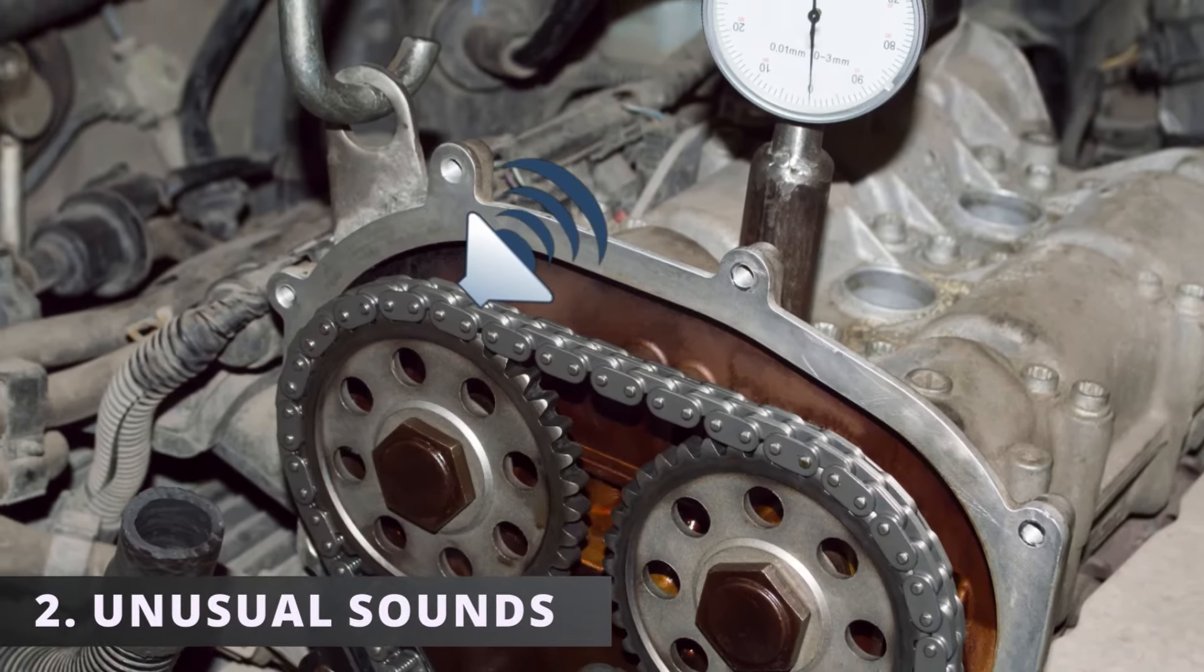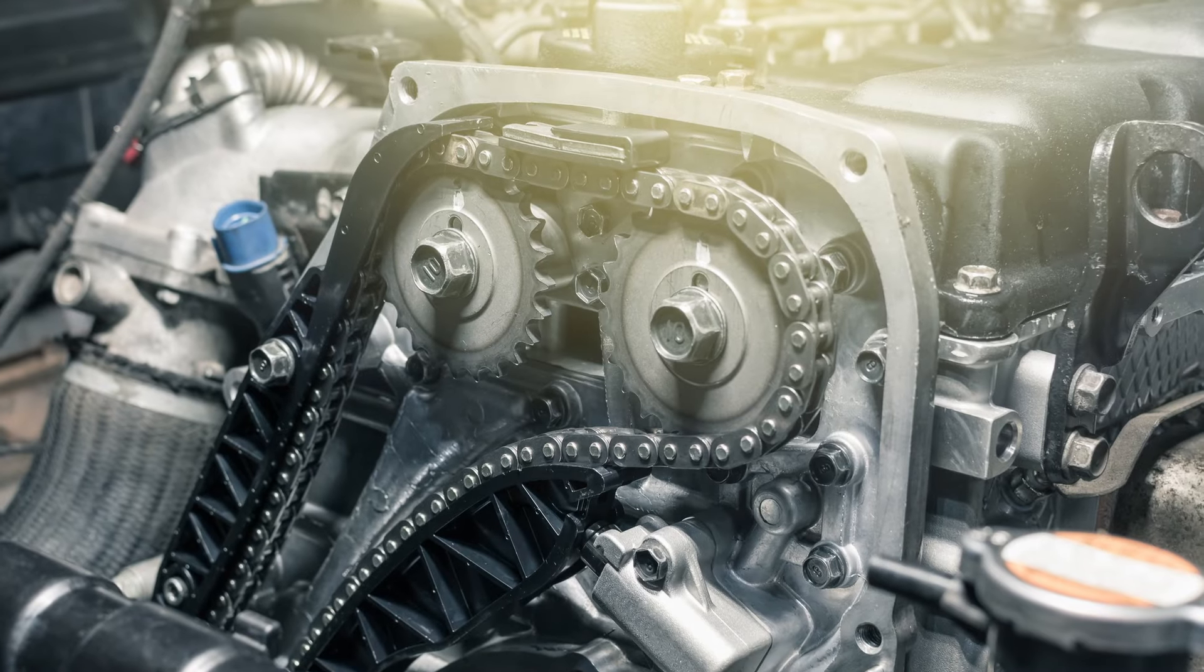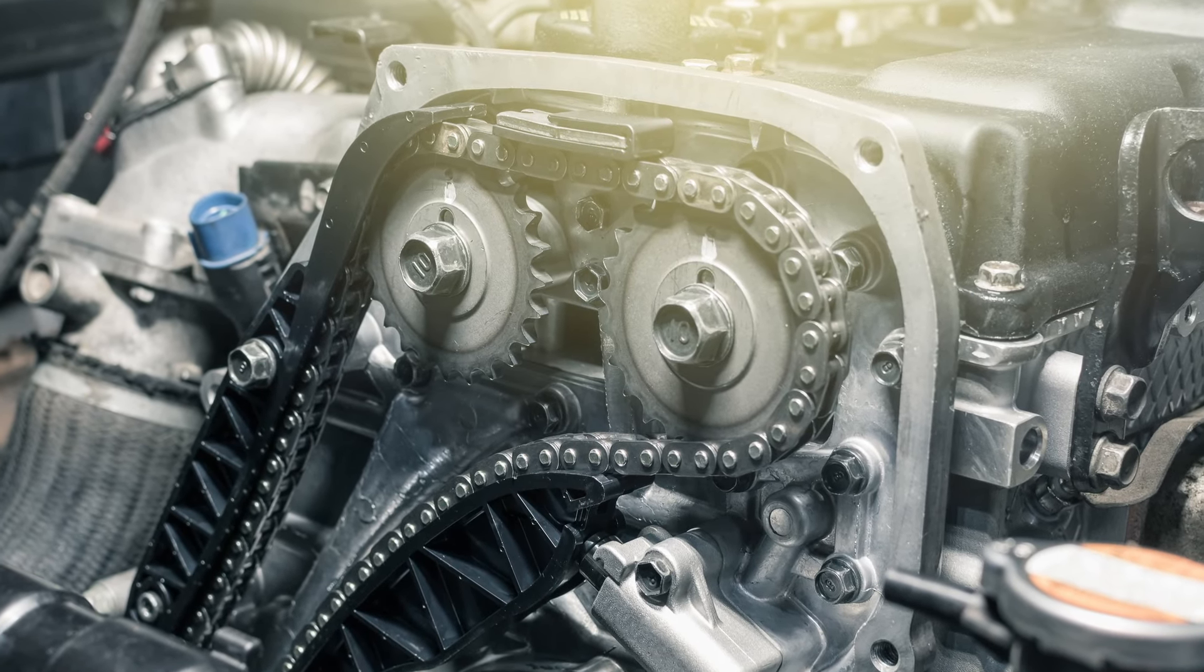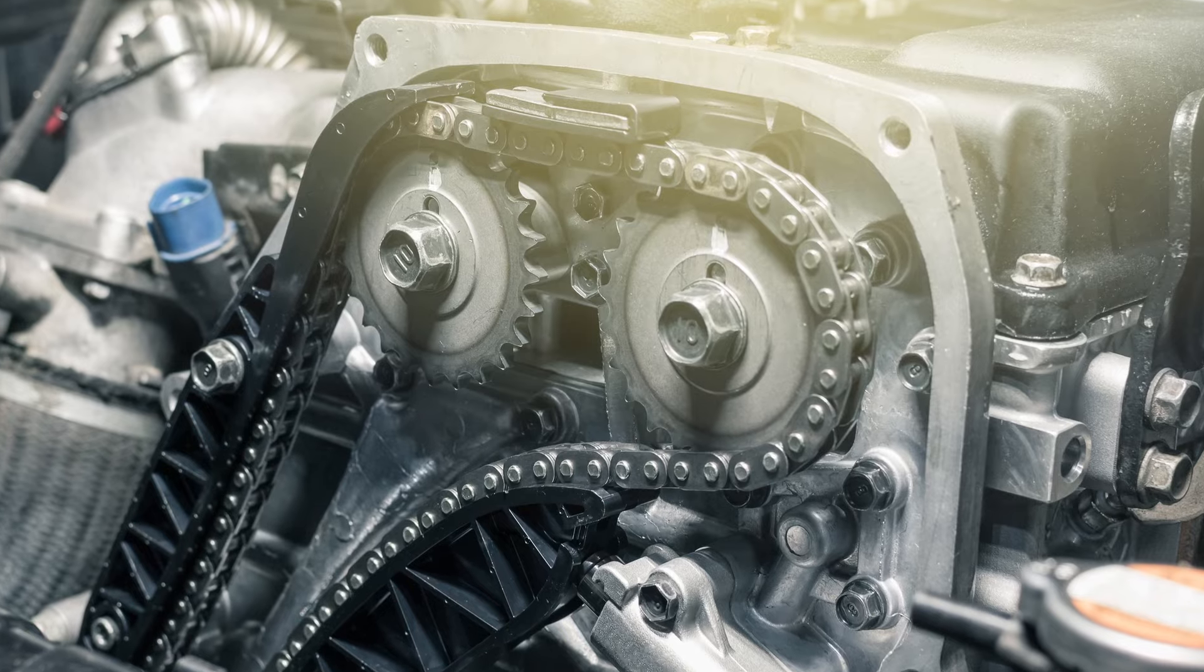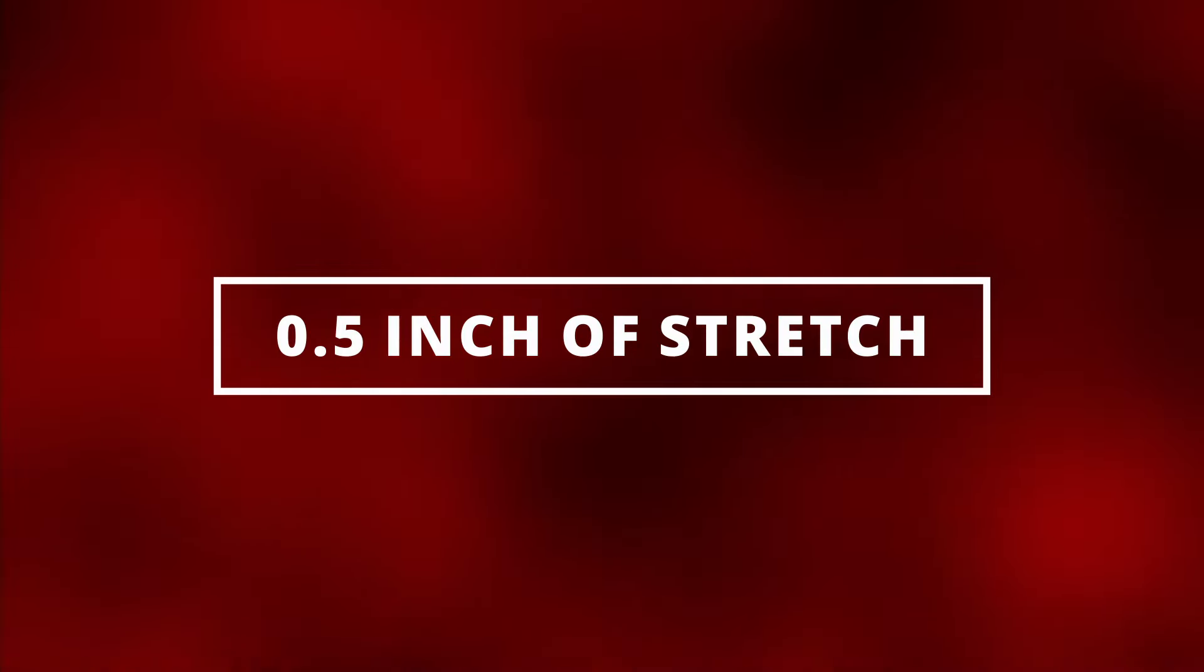The second symptom is hearing unusual sounds. While the car's running, a loose timing chain could be smacking the timing chain cover, creating a rattling, knocking or clattering noise. On most cars the timing chain should not exceed a half inch or more of stretch. If it does, it's best to replace it.